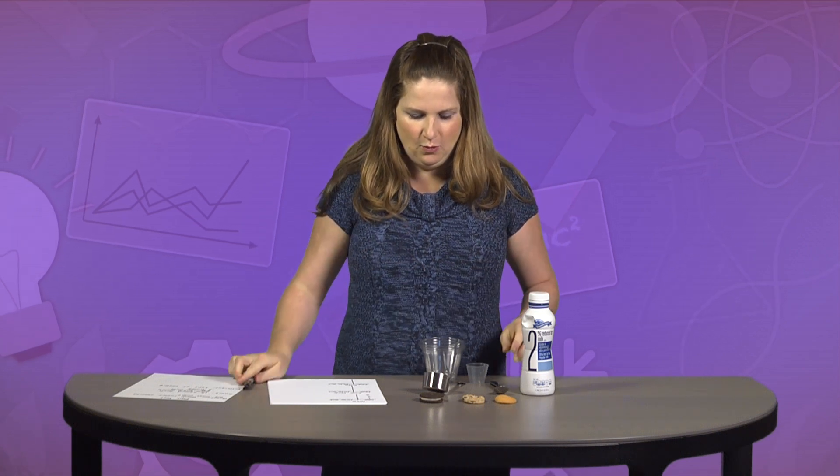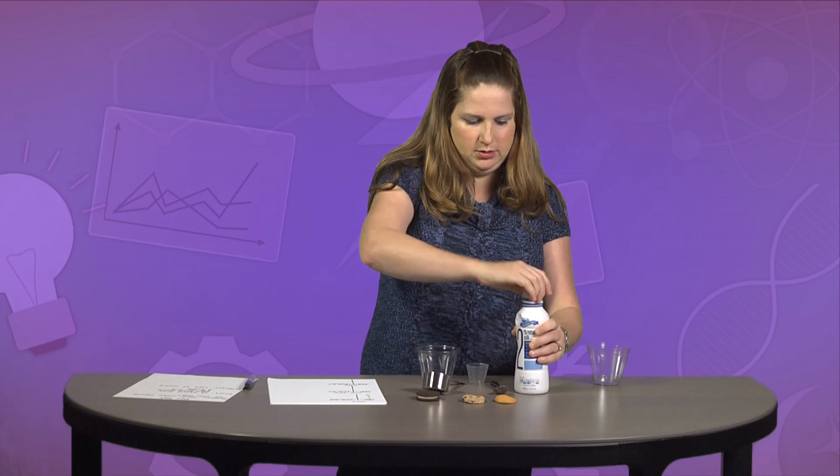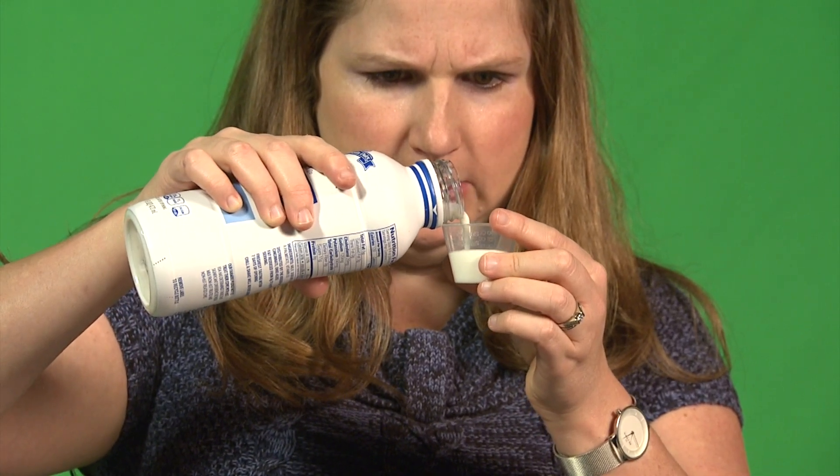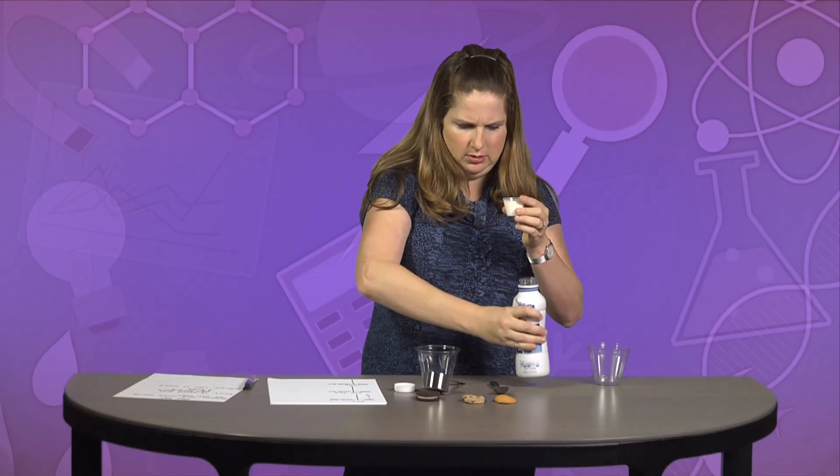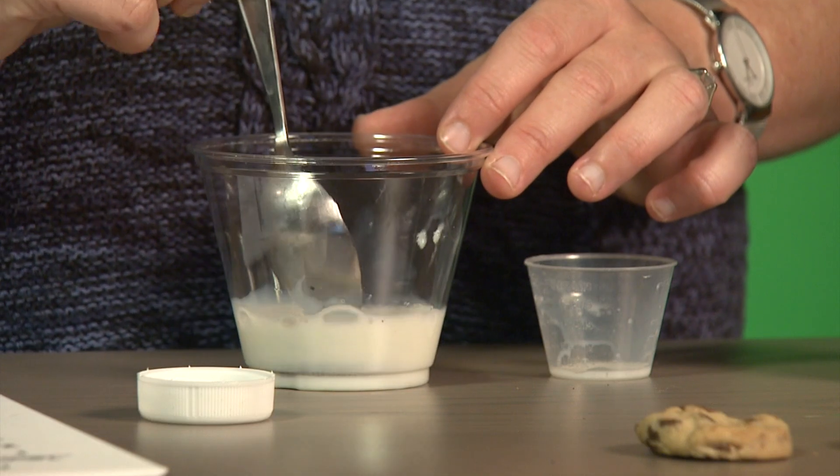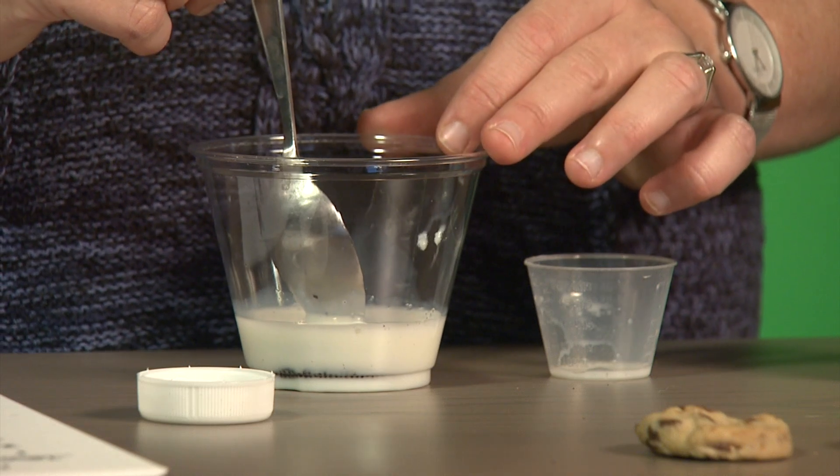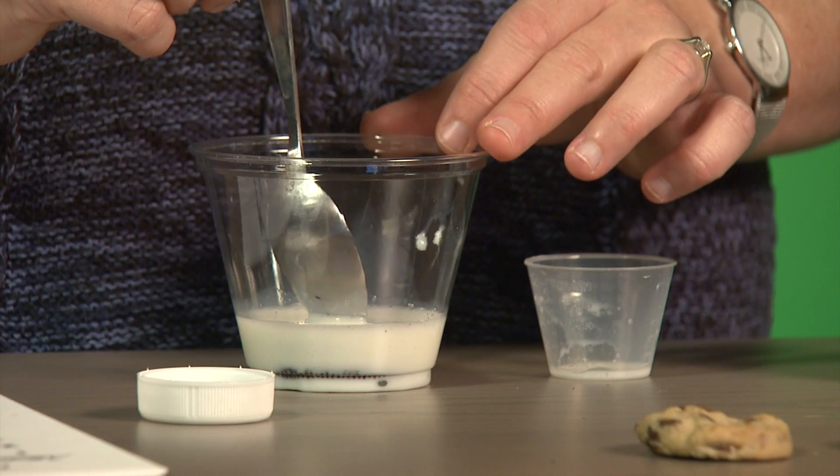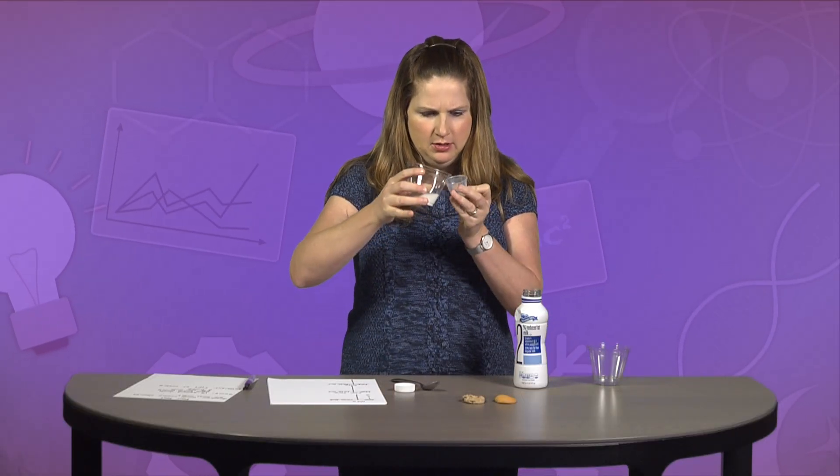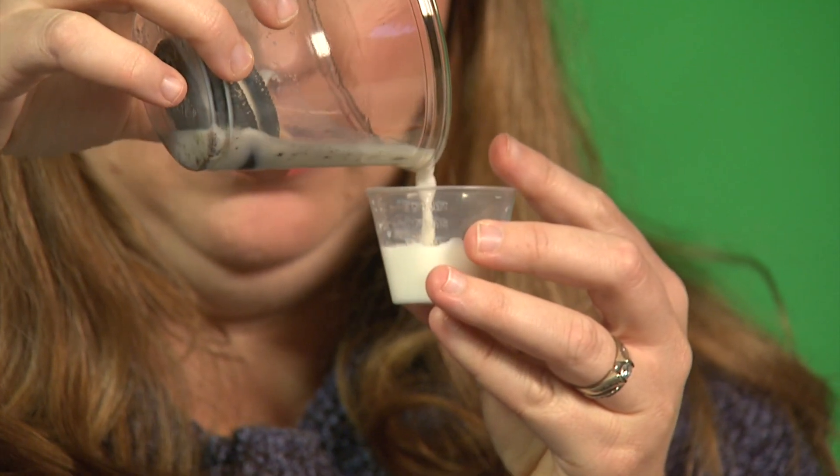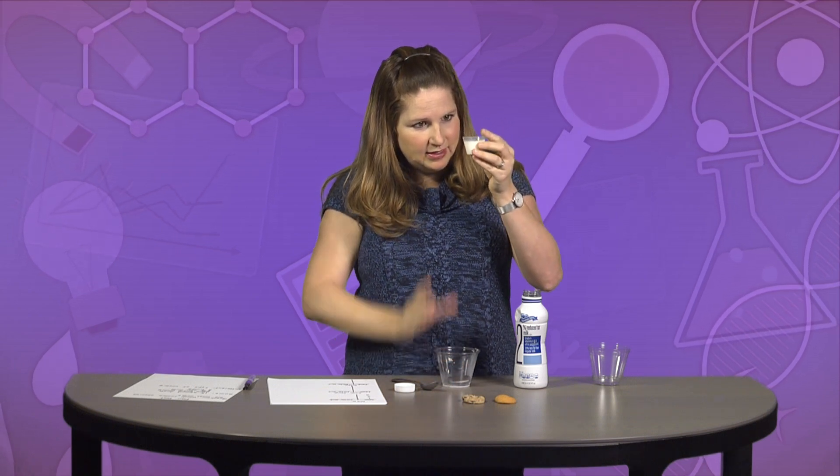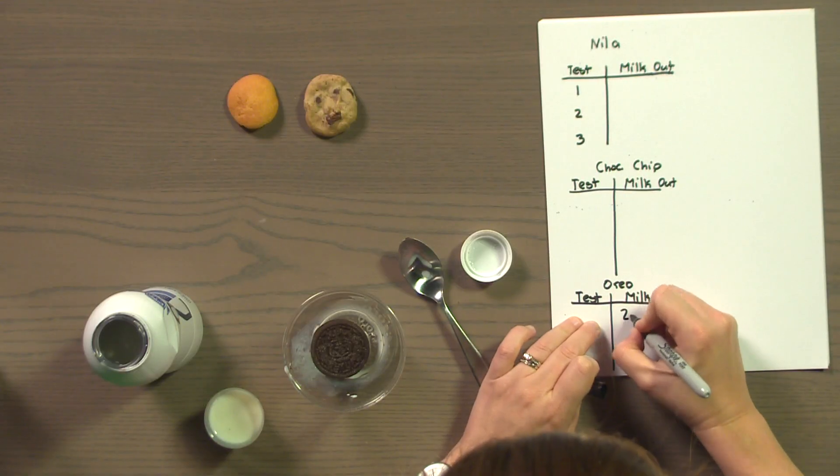Let's start with the Oreo. I'm going to pour and use the same amount of milk. I'm using 30 milliliters of milk, dumping it into my cup. We're going to dunk it in. Get ready to count with me. 1, 2, 3, 4, 5, 6, 7, 8, 9, 10, 11, 12, 13, 14, and 15. Now, I'm going to pour out my milk. Using this, it looks like I got out 28 milliliters.